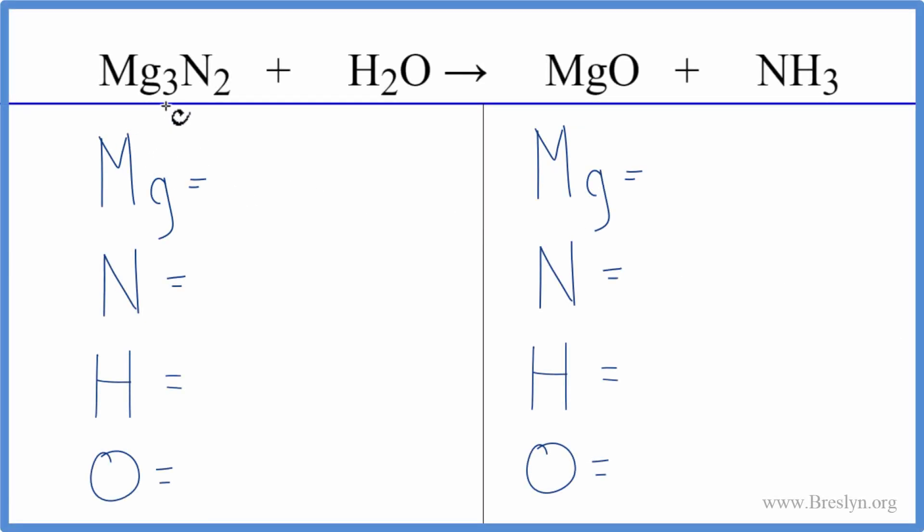To balance this equation, we have Mg3N2 plus H2O. That's magnesium nitride plus water. Let's count the atoms up on each side of the equation, and then we'll balance it.